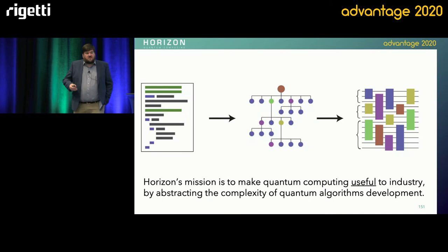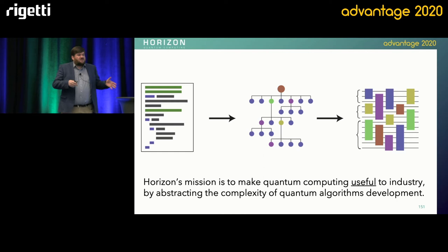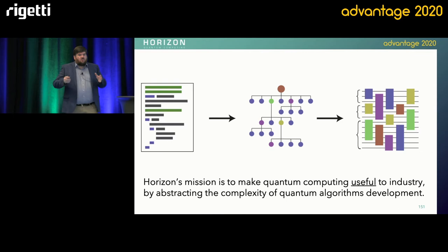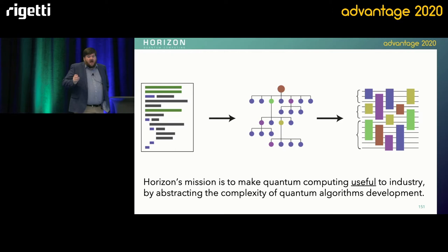In terms of what we're trying to do as a company, we're focused on a different kind of bottleneck in quantum computing. Rigetti is focused on the major bottleneck facing everyone, which is building hardware. If we don't have hardware, we don't have any quantum computing. But there's another bottleneck — the one we're focused on is an algorithms bottleneck.